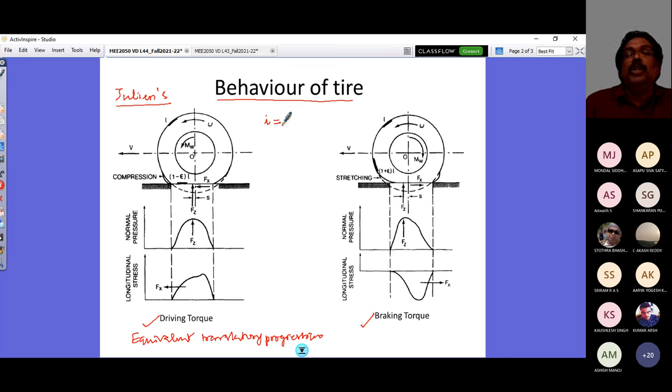Let's define longitudinal slip or longitudinal slip ratio. Since the equivalent translating progression is smaller than that of a free rolling tire, the free rolling tire has velocity R times omega. Whereas at the contact, at the center of the tire, it would be smaller than that. So this difference divided by R omega is what defines your longitudinal slip, into 100 percent.